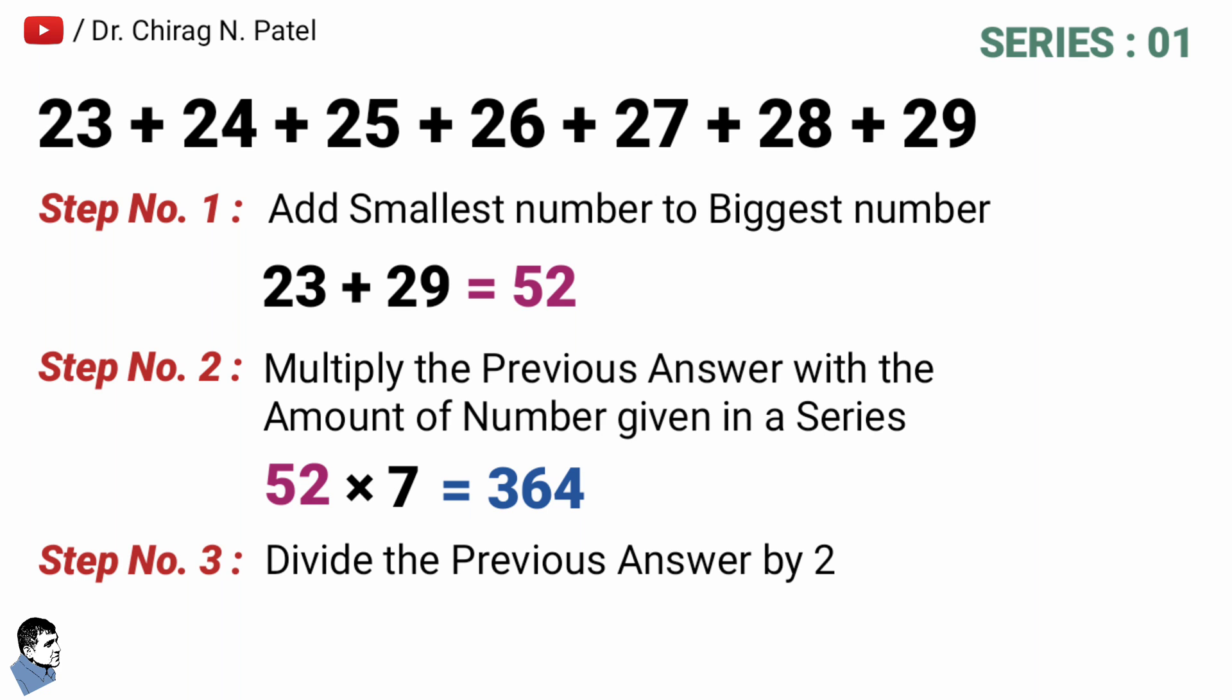Then step number three is divide the previous answer by digit 2. So 364 ÷ 2 is equal to 182, and that's the right answer of the addition of consecutive numbers from 23 to 29. Like this you can do the addition of any consecutive number of series.